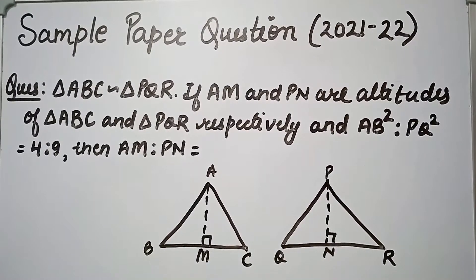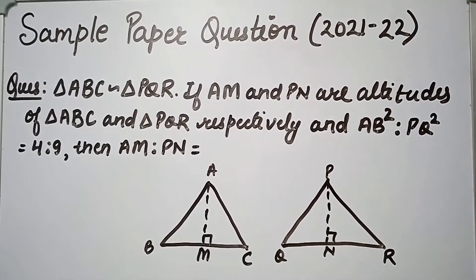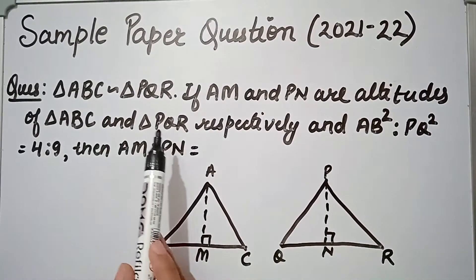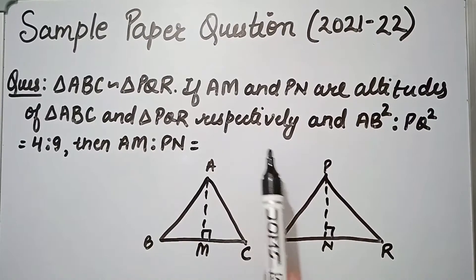Hello guys, welcome back to my channel plus minus maths. Today's question is: Triangle ABC similar to triangle PQR. If AM and PN are altitudes